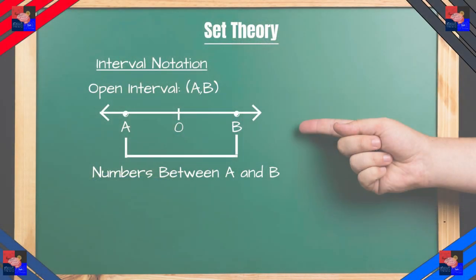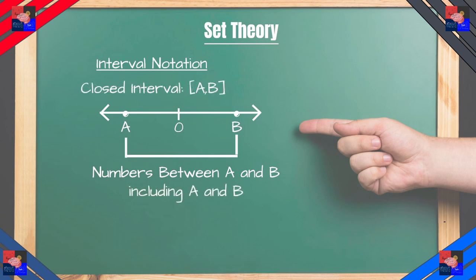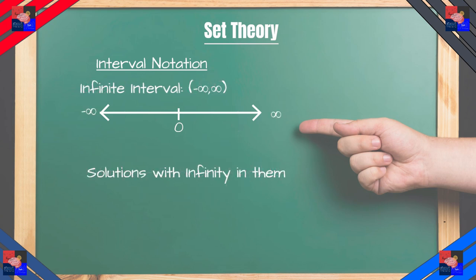And there are three types of intervals: the open interval, that is between a and b where a cannot be reached and b cannot be reached, all numbers between them. In the closed interval, we write it as closed bracket. Here it is a through b except a and b are included in the set. And infinite intervals are basically any sets that have the intervals infinity in them.